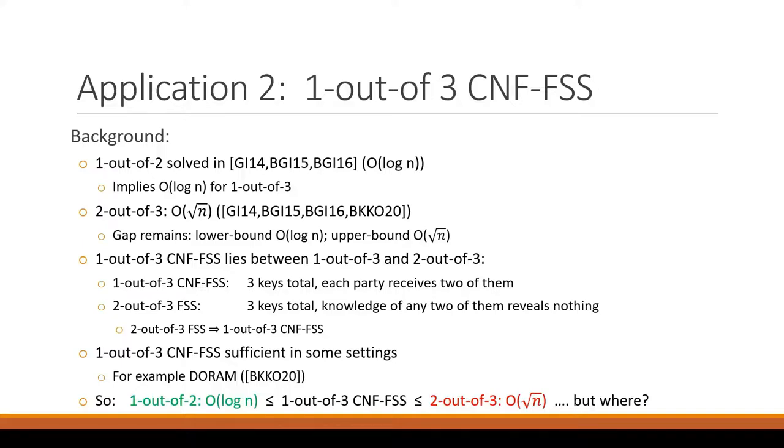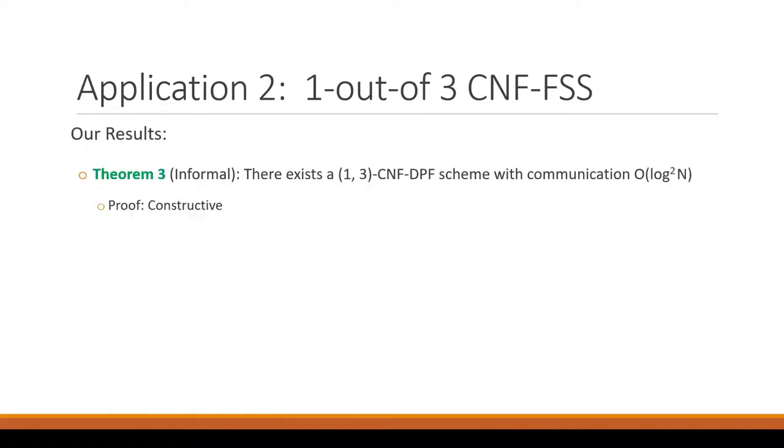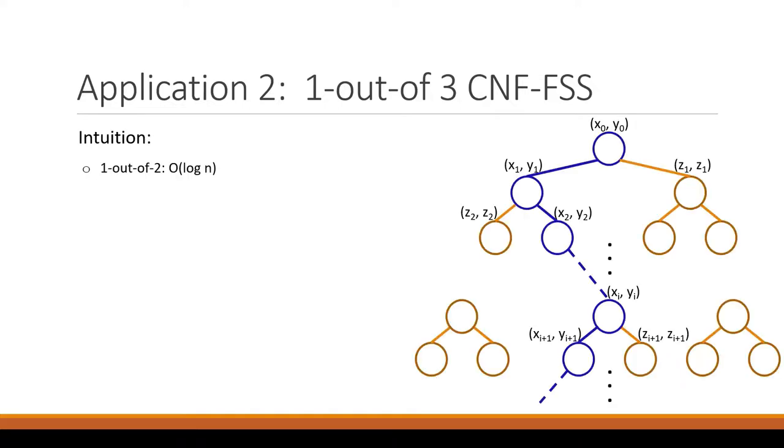So the question is, what can we achieve for the GEN protocol in terms of communication for one out of three CNF FSS? Is it closer to the log N lower bound or to the best known upper bound of square root N? So our result is that there exists a one out of three CNF DPF scheme with communication log squared N, which is close to the optimal lower bound. And we actually construct such an algorithm, which I will present the intuition for now.